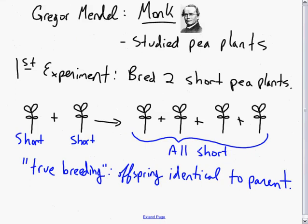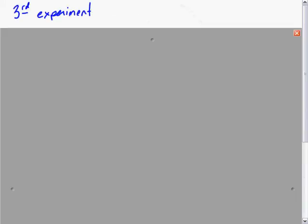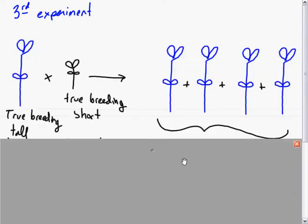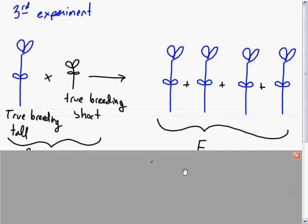We could see that if you have tall parents, there is no guarantee that you're going to be tall in terms of pea plants. However, if you had short parents, you were guaranteed to be short. This started him thinking a little bit.